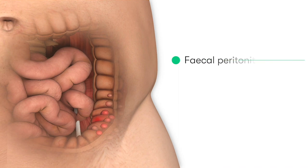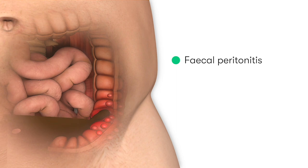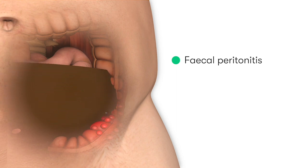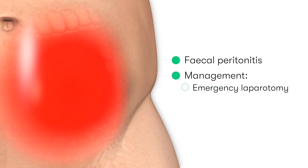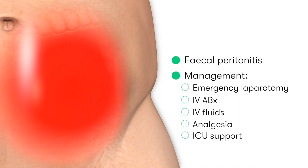The last and most severe Hinchy classification is Hinchy 4, which describes when the patient has feces or fecal fluid floating around the abdomen — which is really as bad as it sounds. These patients are very sick and septic, and if they're going to have any chance of surviving they'll need an emergency laparotomy, along with urgent IV antibiotics, IV fluids, analgesia, and support from the intensive care team.